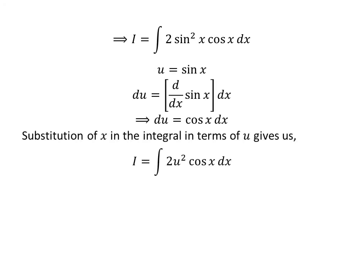Let us substitute sine of x by our assumed value in the integral. So I is equal to the integral of 2 times square of u times cosine of x.